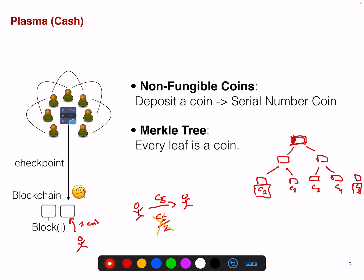You also need to send the entire history of the coin. If a peer wants to receive coin C5, he has to know when he received the coin and when the original owner actually deposited the coin into the chain. So you need to verify the whole history of the coin.